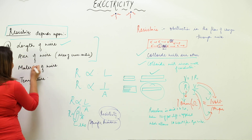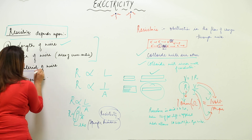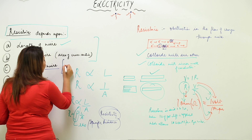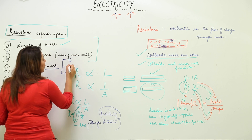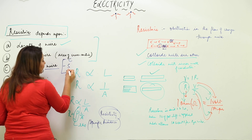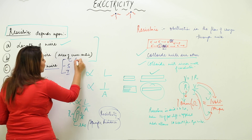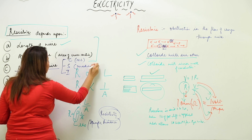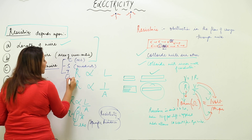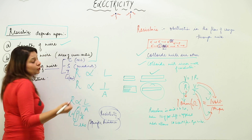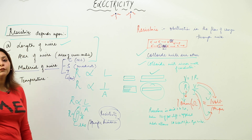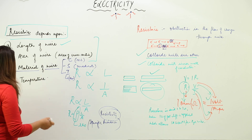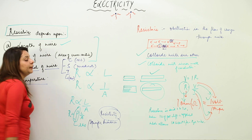The third factor is the material of the wire. Different materials — conductors, semiconductors, and insulators — have different resistances. Conductors have almost nil resistance, semiconductors have moderate resistance, and insulators have maximum resistance. So the type of material the wire is made of significantly affects its resistance.